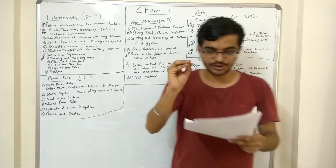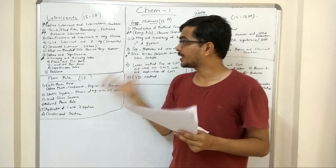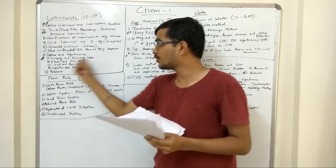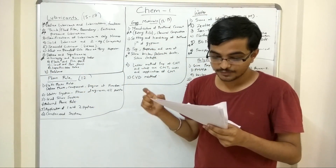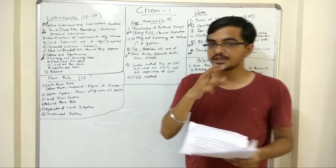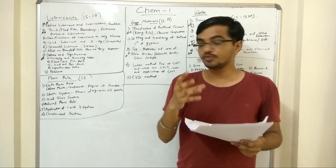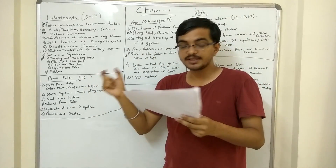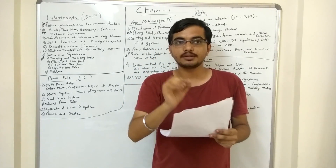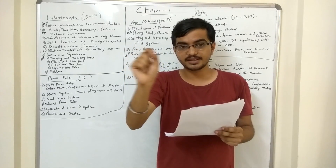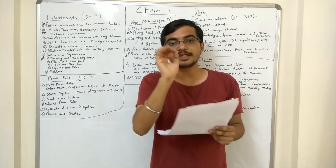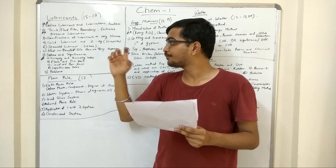Around a 4-5 mark question is generally seen on this topic. Another very important topic is: define and significance of viscosity and viscosity index, flash and fire point, cloud and pour point, and saponification value. A question on this is again generally seen, for around 6 marks. They will state any 3 of them and you might have to define and give the significance of those properties.